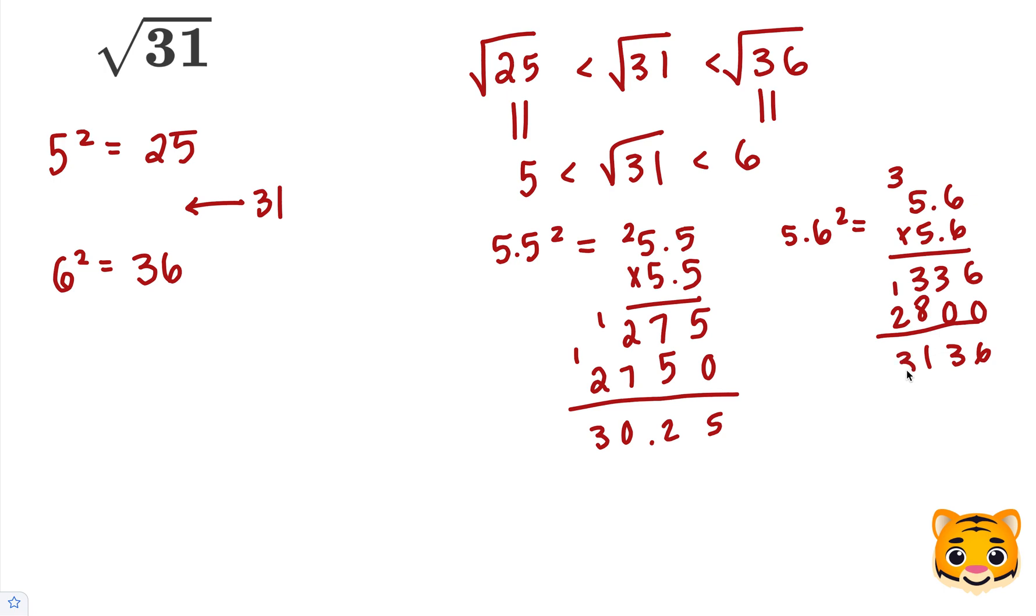So we can see that 30.25 is 0.75 away from 31, but 31.36 is 0.36 away, so this one is closer.